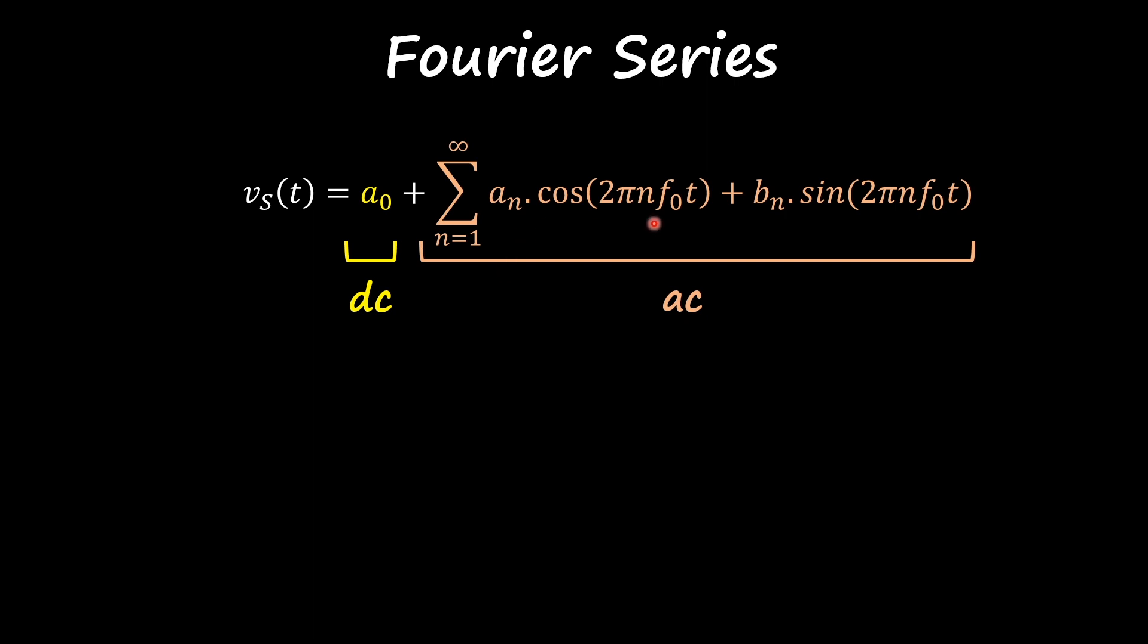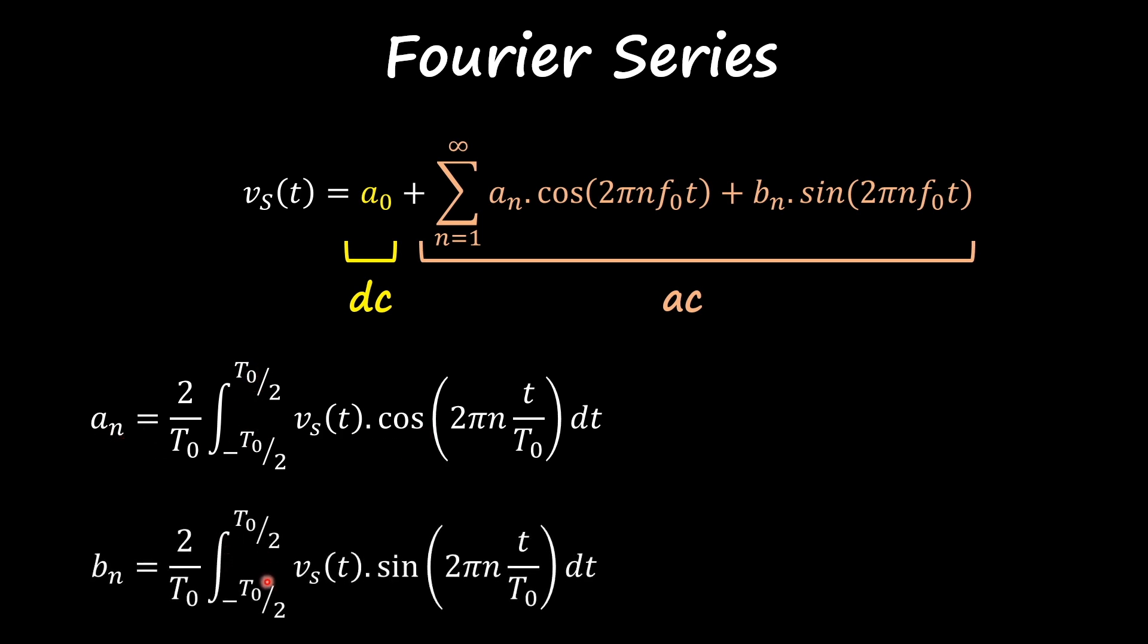For a_n and b_n we have also a set of integrals of your signal times the cosine over this period for a_n, or your signal times the sine and the integral of that over this period for b_n. We call a_n and b_n the Fourier coefficients of your signal.